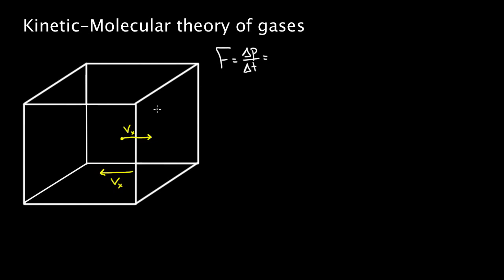What is the change in momentum for this collision? The particle came in with velocity Vx and left with negative Vx, so the change in velocity is two times Vx. Therefore, the change in momentum is M times two Vx. Dividing by delta T gives the force, but we need to eliminate delta T from the equation to get a useful result relating pressure, volume, and speeds.